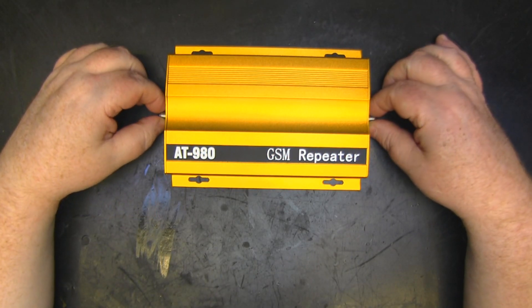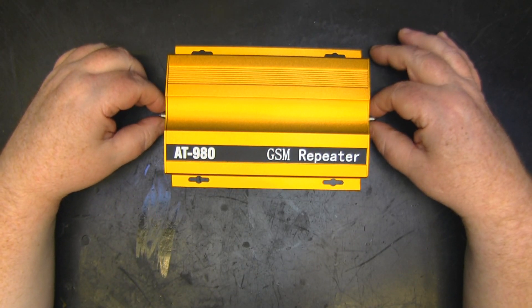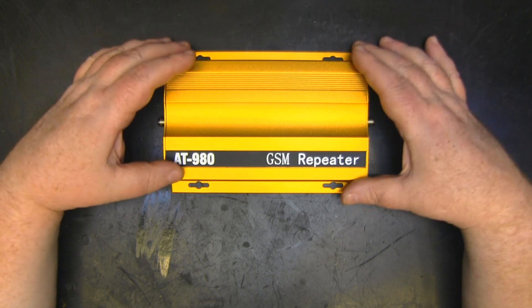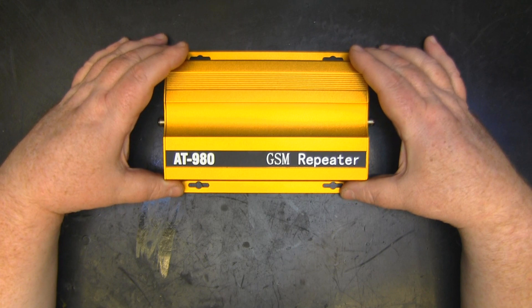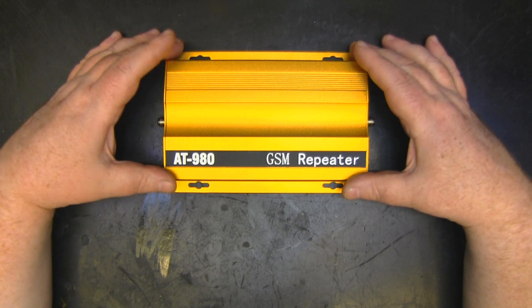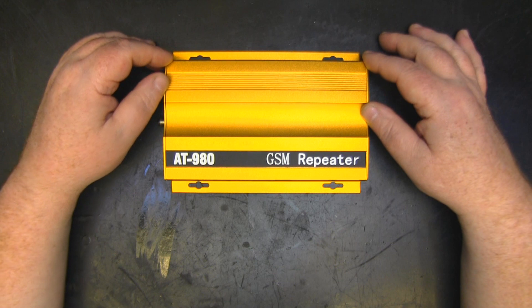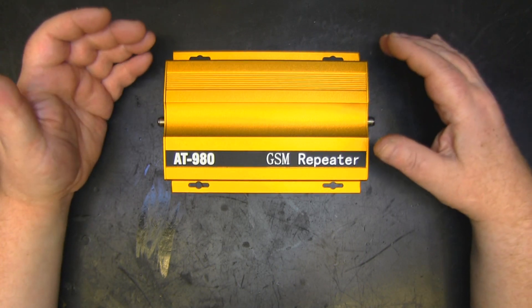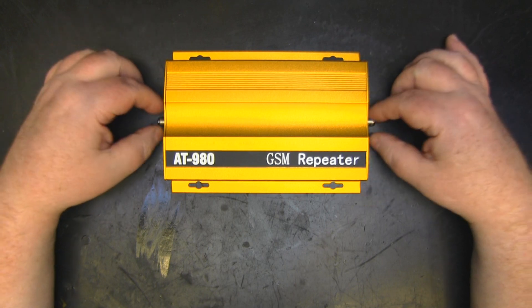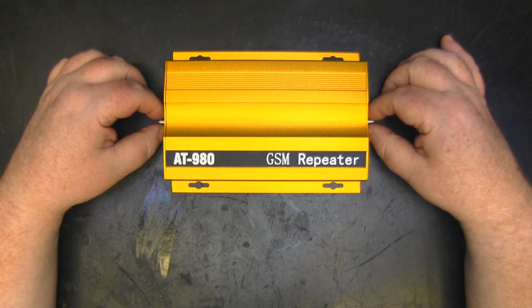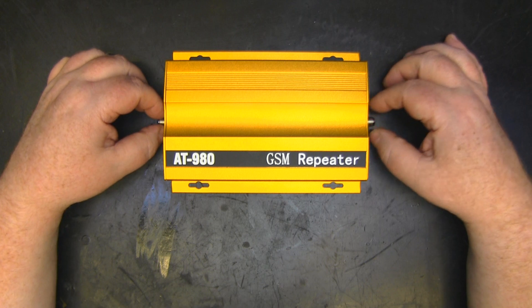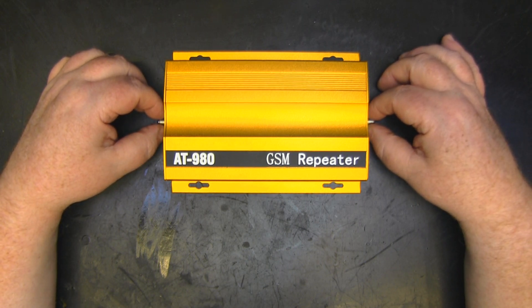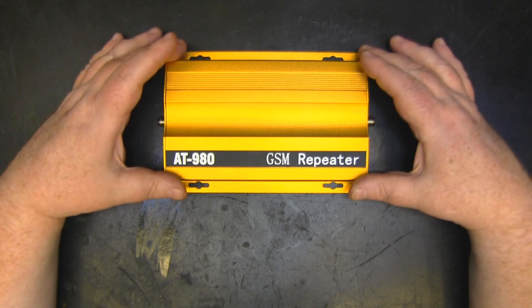Now, what I've got for us to take a look at today is a GSM cell phone signal repeater booster. This is a 900 megahertz booster and it was sent in by a subscriber of the channel who doesn't want me to mention his name. He bought this as a package on Wish.com. It wasn't the one that he wanted - he wanted the 2.1 gigahertz version of this.